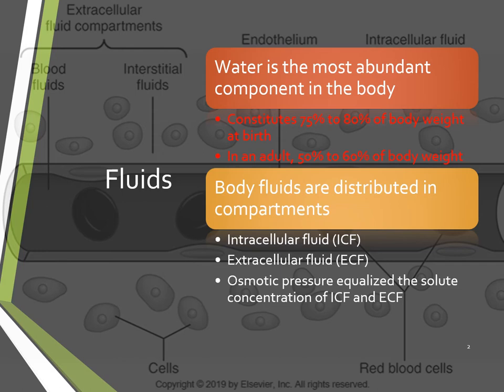Body fluids are distributed into compartments. We need to understand intracellular fluid and extracellular fluid, and water travels through and between them via osmotic pressure, which equalizes the solute concentration of both compartments. If there's more fluid on the outside of a blood vessel than the inside, then according to osmosis, the fluid on the outside will pass through to the inside to balance it out, and the same happens in reverse.